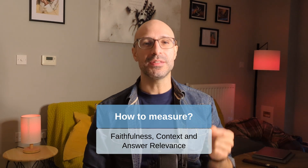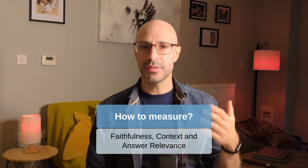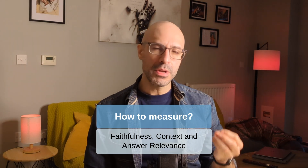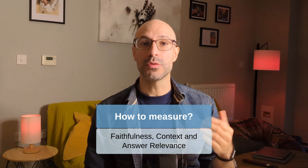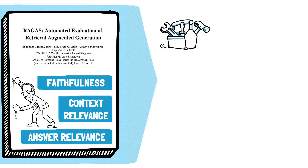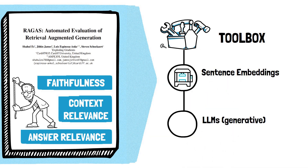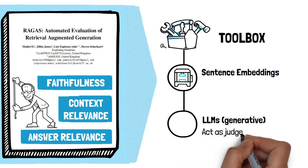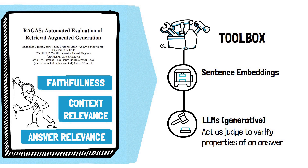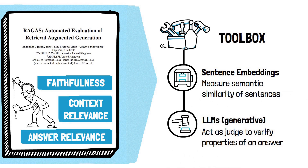Establishing what we want to measure is only one part of the challenge. Figuring out how to measure it effectively is the other part. For metrics like faithfulness, context relevance, and answer relevance, we need methods to evaluate these aspects reliably. The main tools in our toolbox are sentence embedding models and LLMs themselves. You can prompt LLMs to act as judges, asking them to verify certain properties of an answer. On the other hand, embedding models allow us to measure the semantic similarity between text snippets, helping us check whether these snippets are similar in meaning.